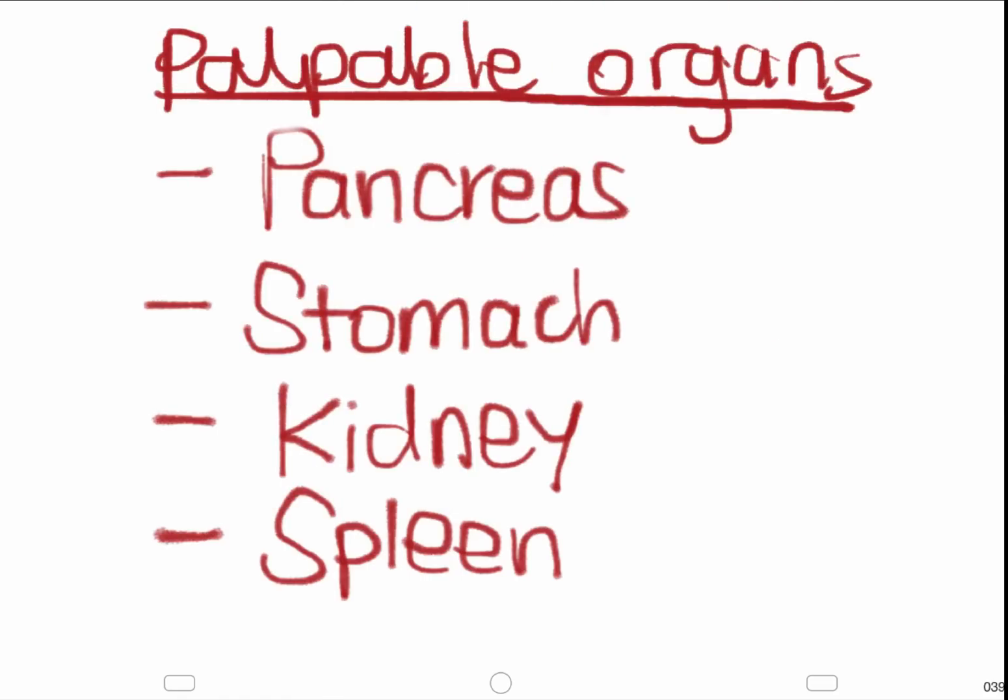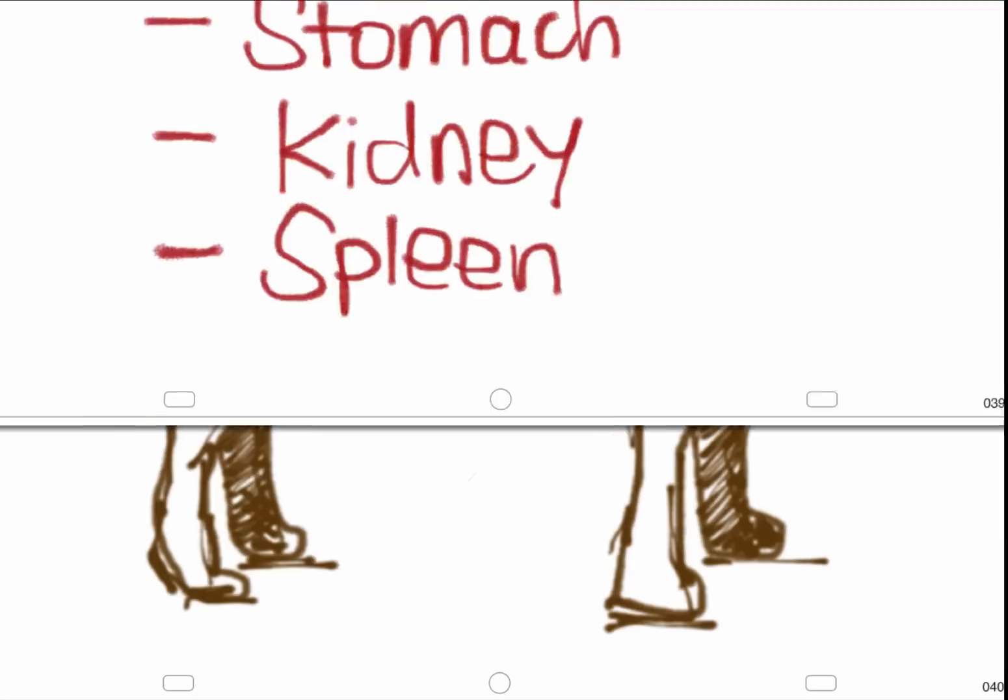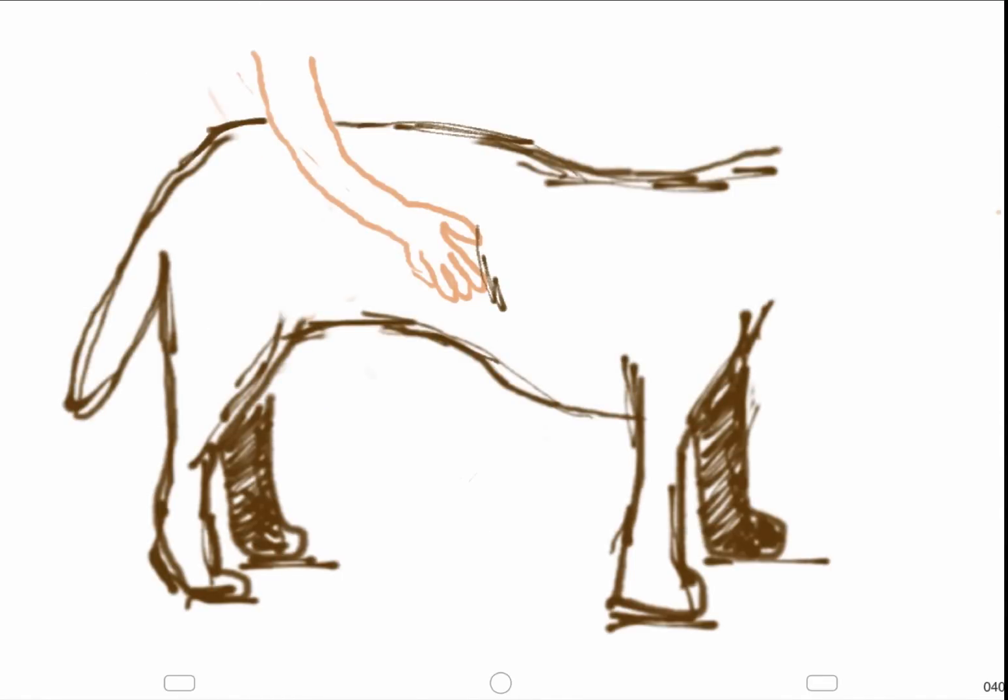The pancreas, stomach, kidneys, and the tip of the spleen should be felt cranially. The liver should not be felt. The tip of the left kidney should be felt just behind the ribs, but the right kidney should be situated in the rib cage unless an abnormality is present.